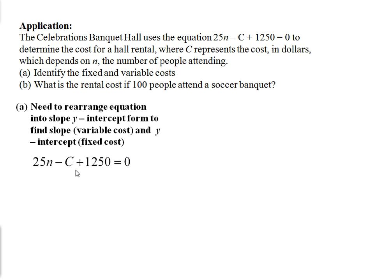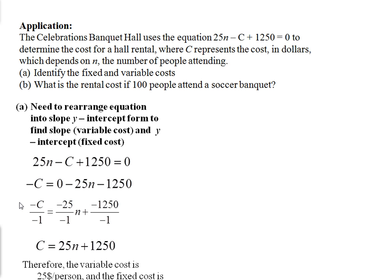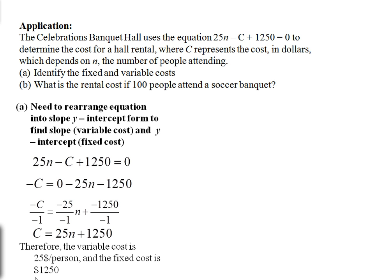So we start with the equation that was given to us. And we slowly rearrange to get it into slope y-intercept form. So in this case, we've subtracted 25n and 1250 from the left and the right hand side. And then we divide each term by negative 1 to eliminate the coefficient of negative 1 with the c. And we're left with c is equal to 25n plus 1250. This gives us a variable cost of $25 a person and a fixed cost of $1,250. So that means the initial cost to rent the hall would be $1,250 and then they're charging $25 for each person.